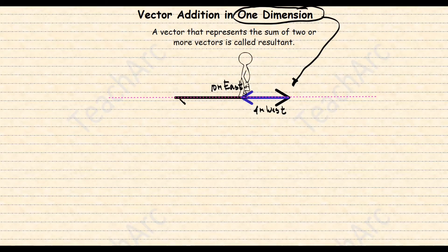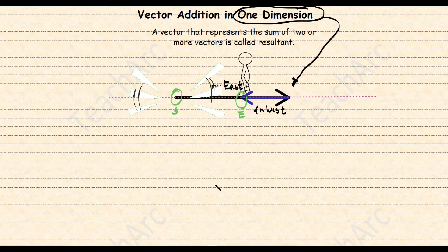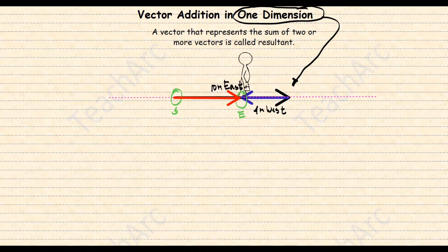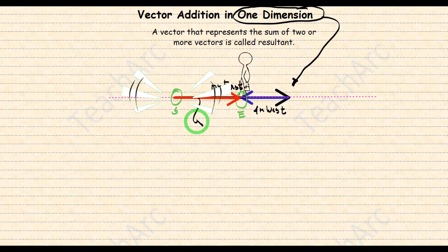This is where vector addition in one dimension comes in. The resultant of these two vectors can be computed using diagrams such as these arrows. We just need to connect these arrows from head to tail. We take note of the starting point and the ending points of the vectors, and we connect these two points together, beginning from the starting point towards the ending point, to get the resultant of these two vectors.